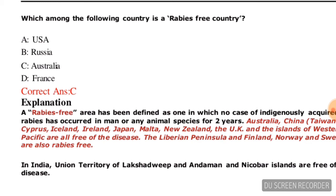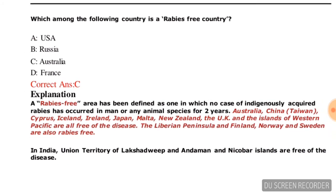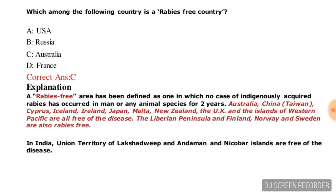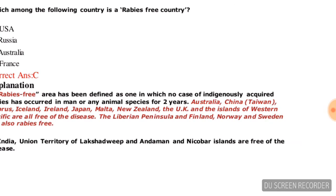Next question: among the following countries, which is a rabies-free country? Options are: USA, Russia, Australia, or France. The correct answer is Australia — there is no rabies in Australia.